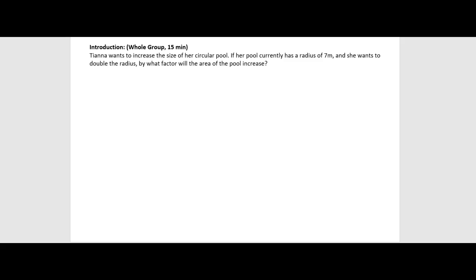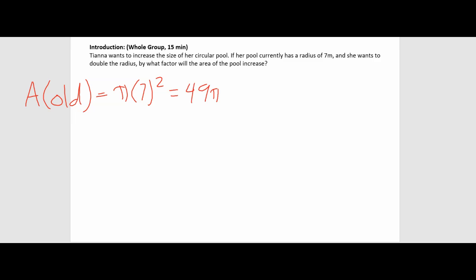So if we look at her old area, the area of a circle is pi r squared. So we have pi times r, which is 7, so 7 squared. The area of the old is 49 pi. We don't have to round or do anything because it doesn't say we have to find the area to the nearest tenth or hundredth, et cetera. So we can just leave it at 49 pi.